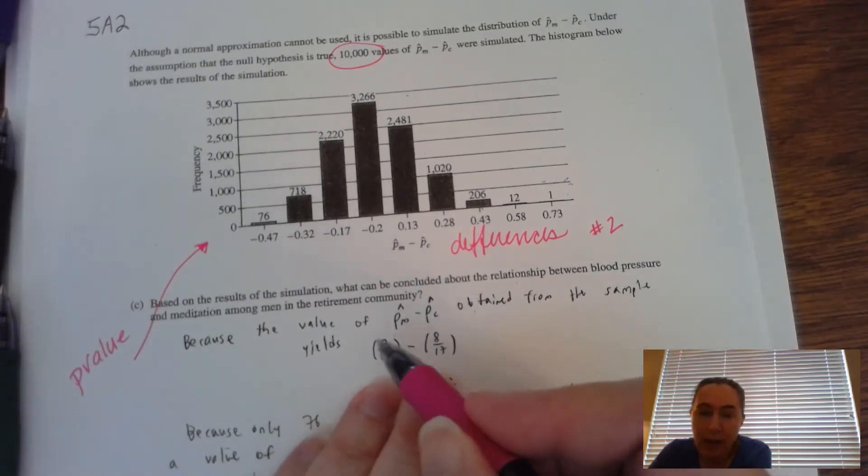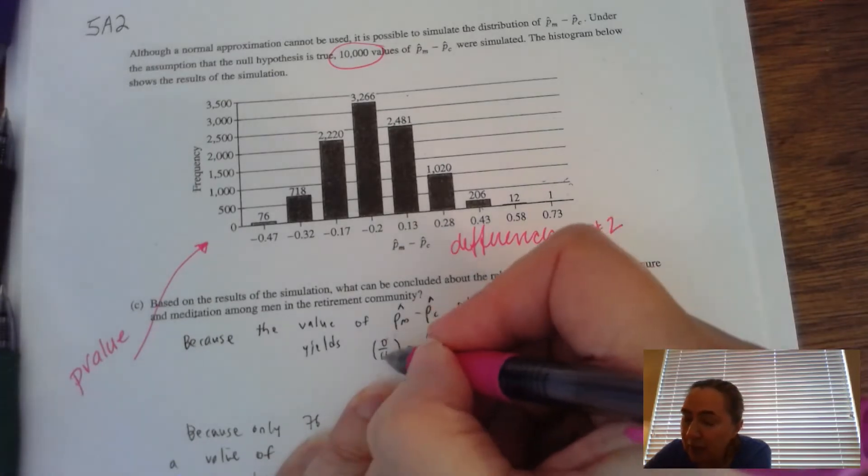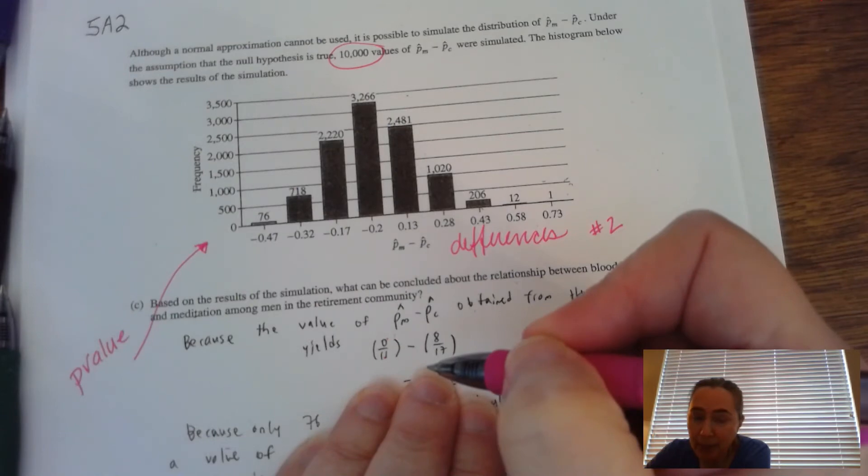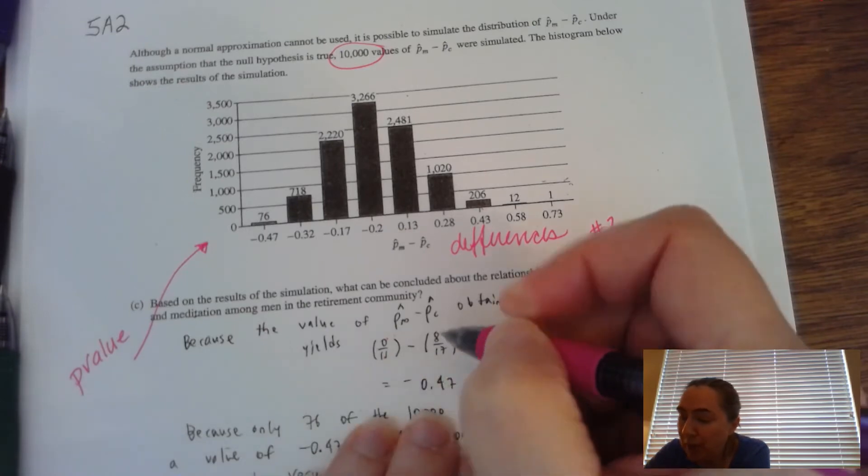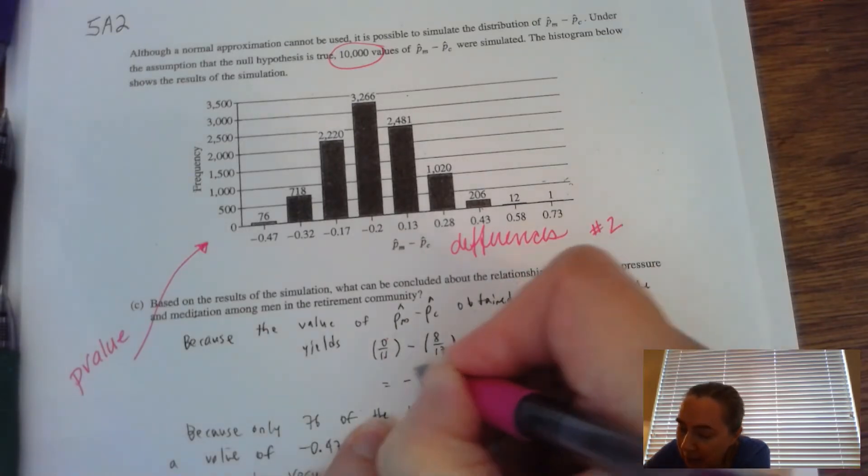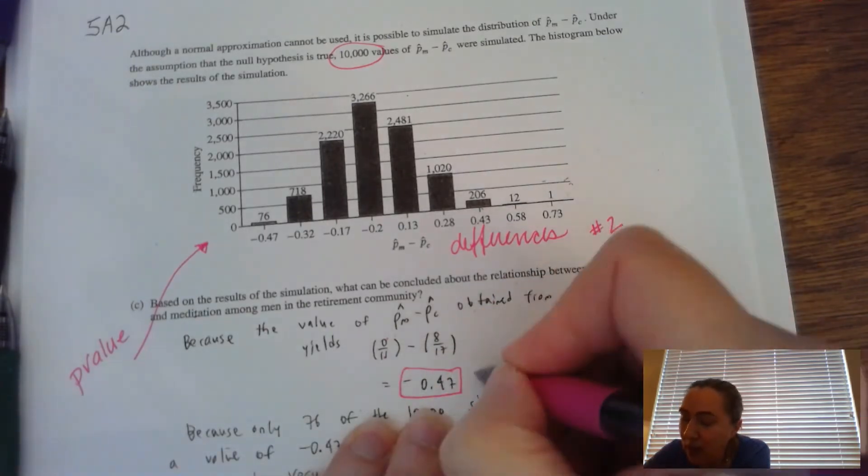But you got to know what to use to be able to come up with the results. For our particular sample of men, you have to know what p hat meditation minus p hat control group was.